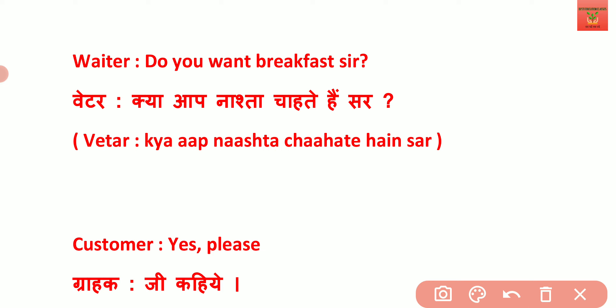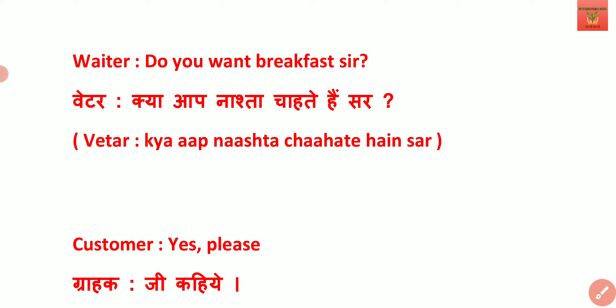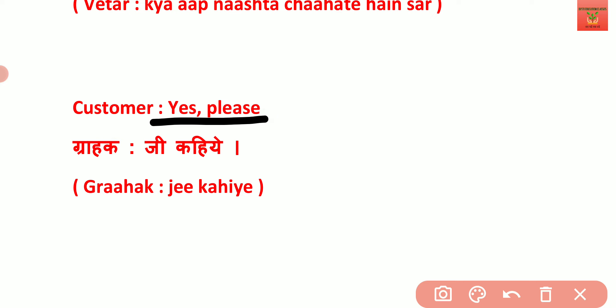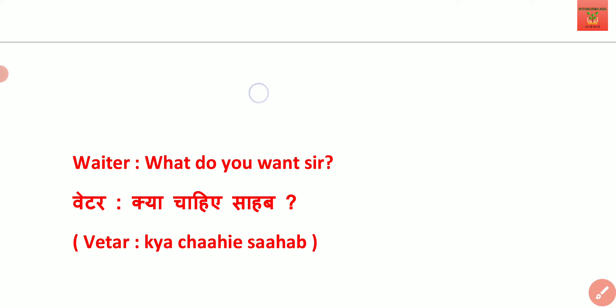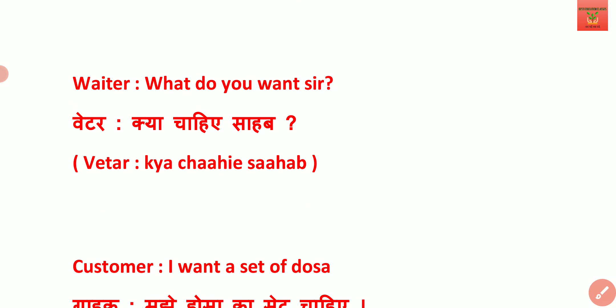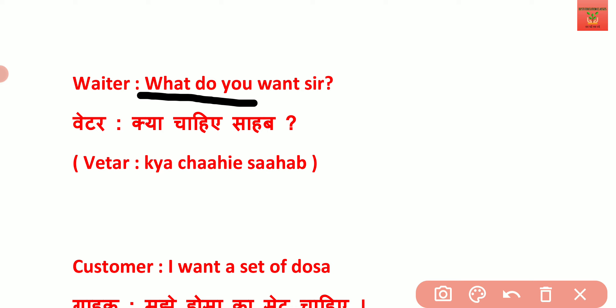Yaahan waiter aapse puch raha hai: 'Do you want?' — yaani ki kya aapko chahiye. Agar aap yeh bolna chahte ho ki mujhe chahiye, toh aap bolo: 'I want breakfast, sir.' Yaahan se 'sir' hatana nahi hai — yaani ki jab aap kisi superior insaan ko, bade vyakti ko aadar dete ho toh unhe 'sir' kehte hain, jaise hum Hindi mein 'Shrimaan' kehte hain. Customer bolega: 'Yes please' — yaani ji, kahiye. Waiter puchta hai: 'What do you want, sir?' Aap 'what do you' ko hatake 'I want' aur uske aage jo bhi dish chahiye uska naam laga sakte ho.